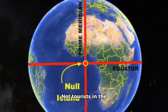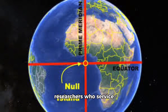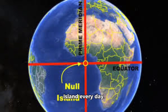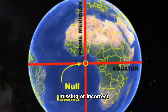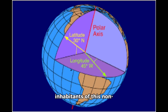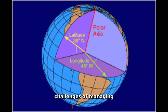Who visits Null Island? Not tourists in the traditional sense. The Soul Buoy is visited by maintenance crews and researchers who service and collect data from the station, contributing to the vital work of PIRATA and the OOI. But in the digital realm, countless data points visit Null Island every day — the orphaned data points with missing or incorrect coordinates, temporarily residing at this cartographic limbo until their true locations can be determined. They are the digital inhabitants of this non-existent island, a testament to the challenges of managing vast quantities of data in an increasingly interconnected world.